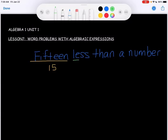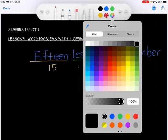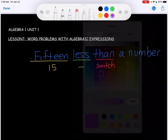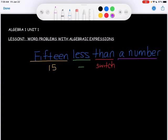Then we have less, which is the operation, and that operation is subtraction. So I'm going to put a minus sign there. Than is a switch word. So I'm going to have to switch the values that are on each side of that subtraction sign. I'll do that in just a second. And then we also have a number, which is some unknown variable. So I'm just going to put X there.